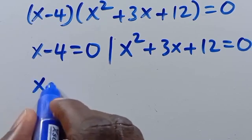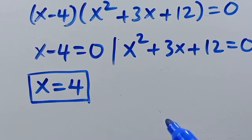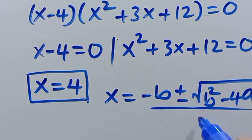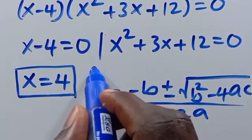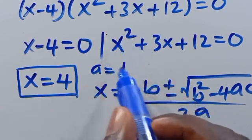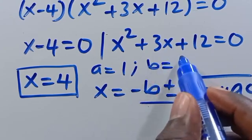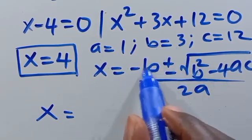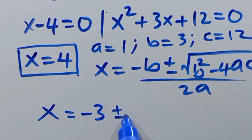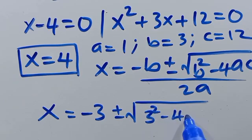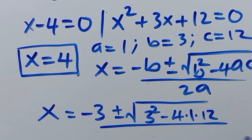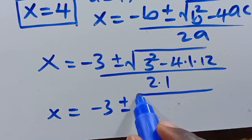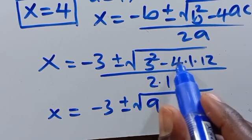For this expression to equal zero, either x minus 4 equals 0, giving x equals 4, or x squared plus 3x plus 12 equals 0. Using the quadratic formula x equals minus b plus or minus square root of b squared minus 4ac over 2a, where a equals 1, b equals 3, and c equals 12.